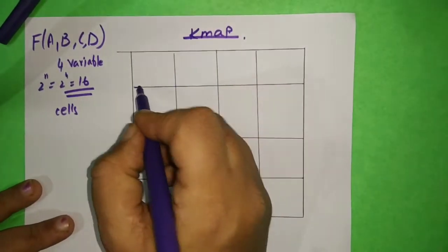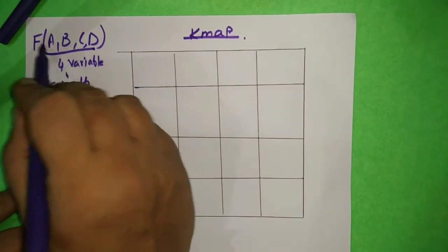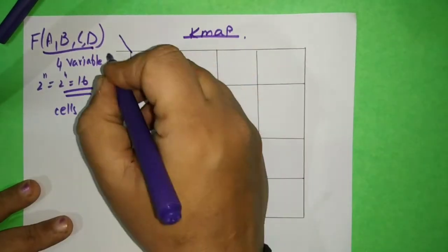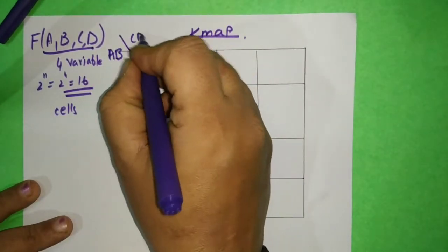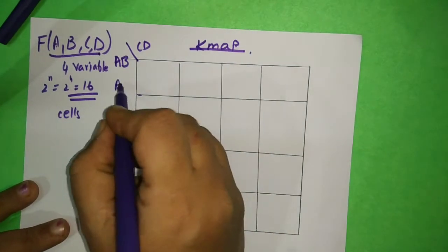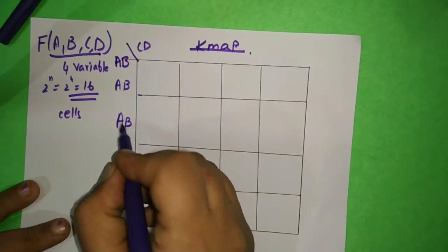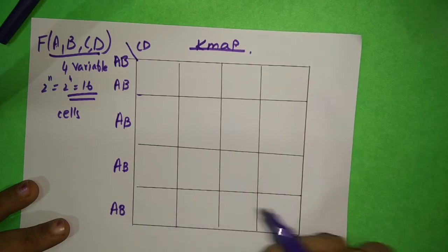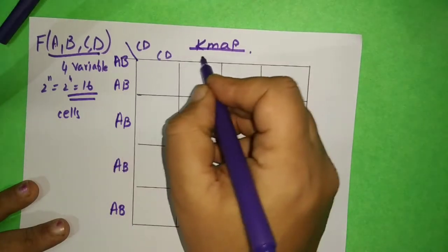Now, since the variable names are A, B, C, D, you are going to mark A, B on all the rows and C, D on all the columns. If it is a different variable name — like X, Y, Z — mark it accordingly.